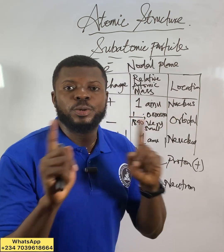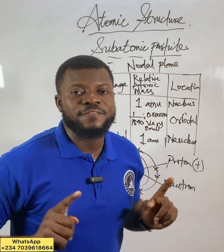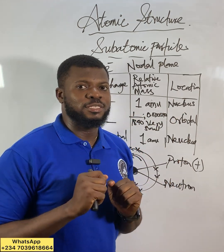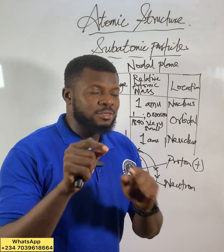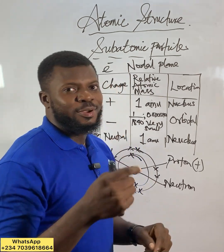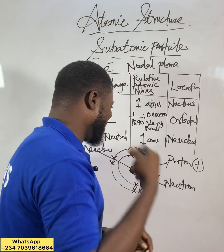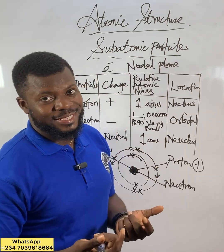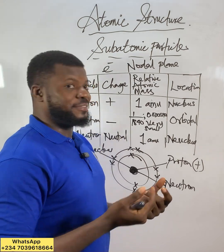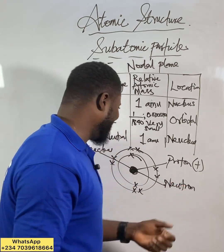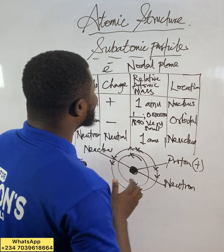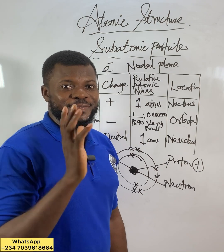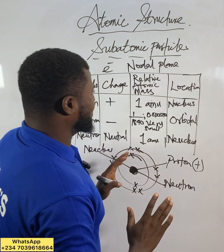The region in space where there is no possibility of finding an electron — we call that the forbidden zone, or forbidden gap. So let me simply say: there is the orbital, the nodal plane, and the forbidden gap.